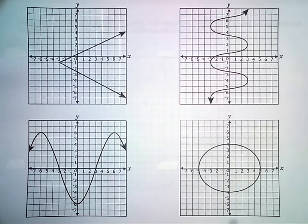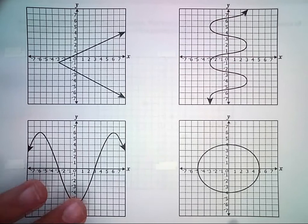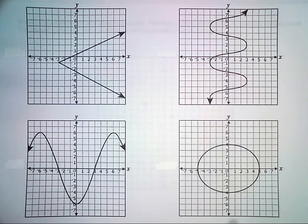We're going to start off with if something is a relation or a function. Now, a graph like this, the easiest way to do it is just vertical line test. What we're looking for is we don't want any x values to repeat.